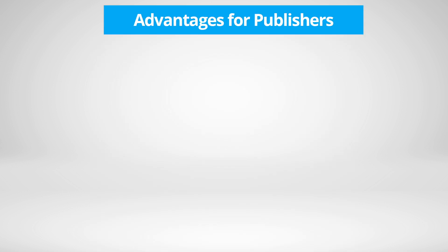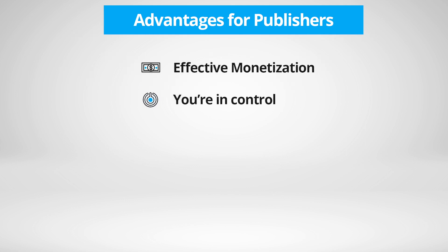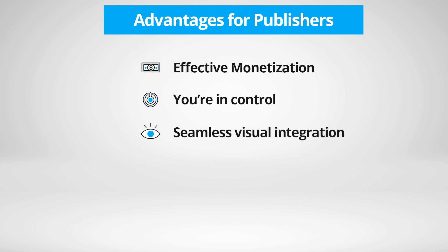Advantages for publishers: Effective monetization — the eCPM rates of multi-format ad zones are often better than those for standard zones. You're in control — you can choose two or more ad formats to show on a specific ad placement and control the style of each. You can use custom fonts, colours and styles for your native ads in rotation. Seamless visual integration — you can set the container of your ad to automatically resize to the ad format that wins the auction, to make sure there are no visual glitches, spaces or cropping when they display.